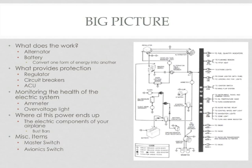In terms of what does the work, on most general aviation aircraft there are two sources of energy: the alternator and the battery. Both just convert one form of energy into another, the final form being electrical energy. In the case of the alternator, we're converting mechanical energy into electrical energy, and in the case of the battery, we're converting chemical energy into electrical energy.